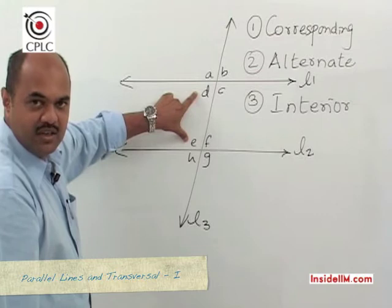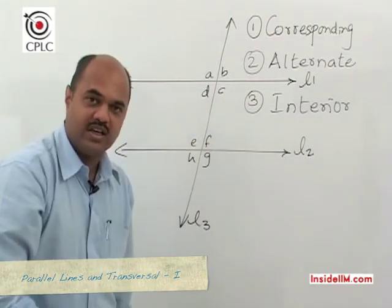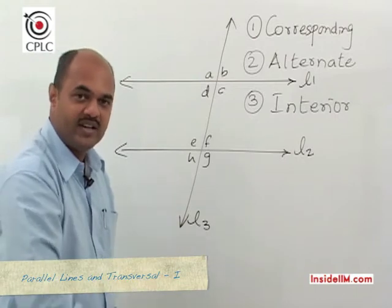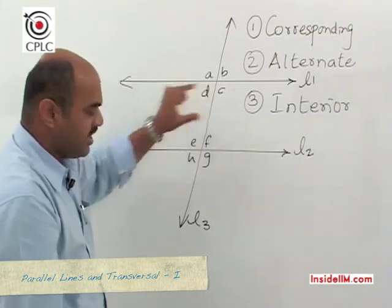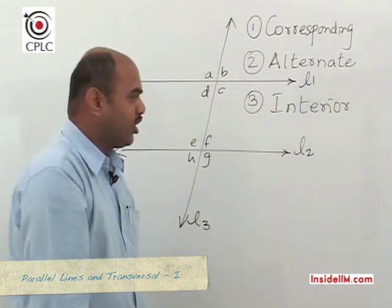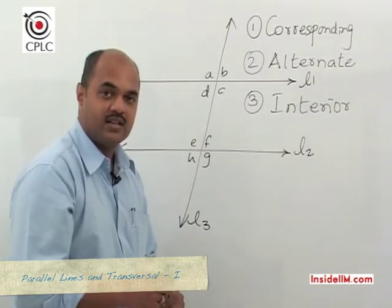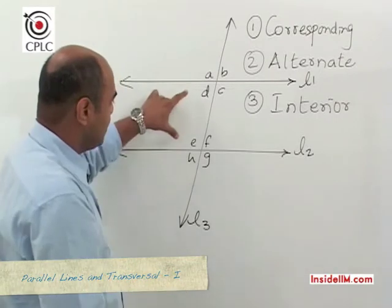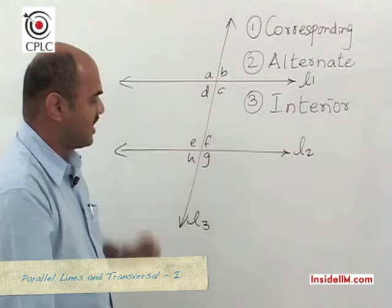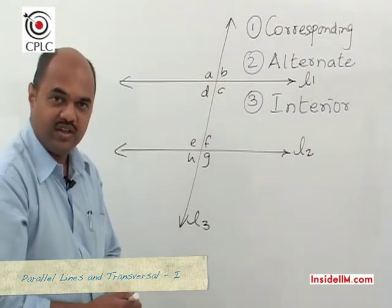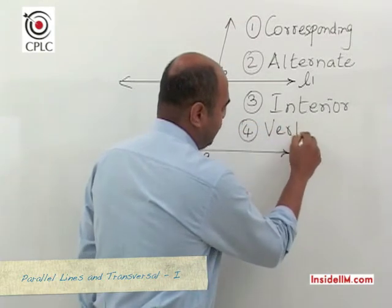The third type is interior angles. D and E are called interior angles, and C and F are also interior angles, giving us two pairs of interior angles. The property for interior angles is that they are supplementary, which means D plus E equals 180 degrees, and similarly C plus F equals 180 degrees.